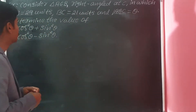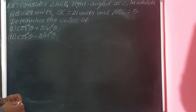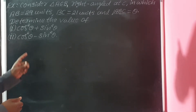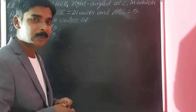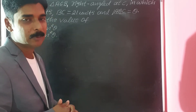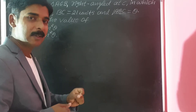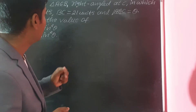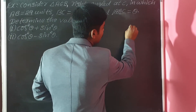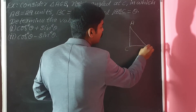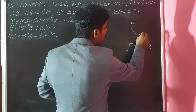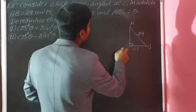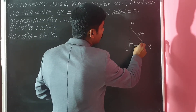Consider triangle ACB, a right triangle, in which AB equals 29 units, BC equals 21 units, and angle ABC equals theta. We need to determine the value of cos²θ + sin²θ, and cos²θ − sin²θ. First, let us draw the diagram. Triangle ACB is right-angled at C, with AB equal to 29 units, BC equal to 21 units, and angle ABC equal to theta.